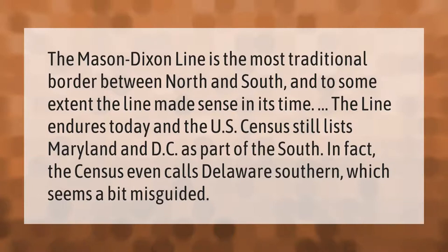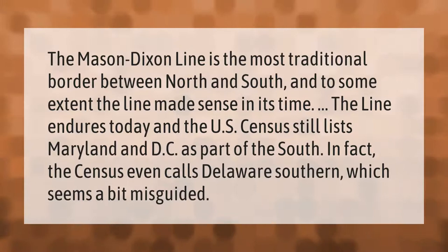The Mason-Dixon line is the most traditional border between North and South, and to some extent the line made sense in its time. The line endures today, and the U.S. Census still lists Maryland and D.C. as part of the South. In fact, the Census even calls Delaware Southern, which seems a bit misguided.